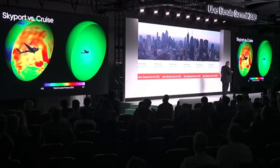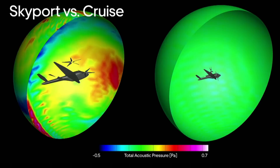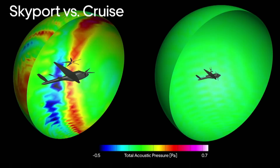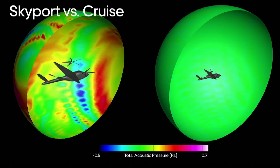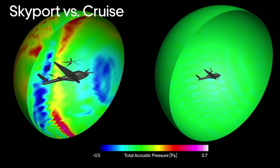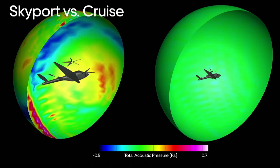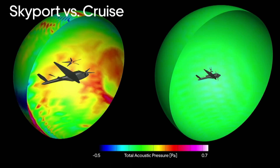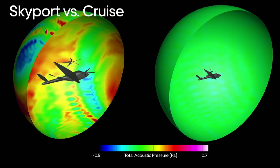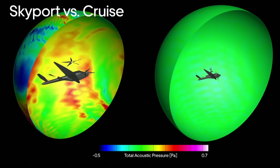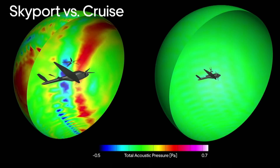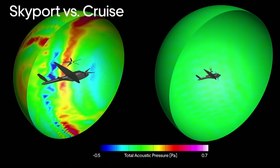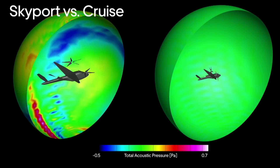Here we're visualizing the unsteady pressures propagated to a sphere of observers away from a vehicle. On the left it's in hover, on the right it is in cruise. On the left we're basically 100 meters away and you can see those unsteady pressures — it's in slow-mo, but you can see the directivity and the magnitude of those pressure waves. On the right, it's very hard to see at all — much lesser magnitude. The shades of green are hard to discern. Also, that sphere is much further away because it's in cruise — say, 300 meters away.